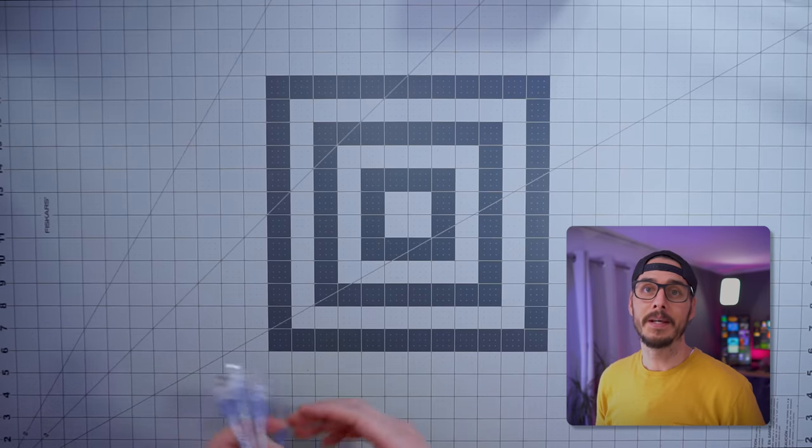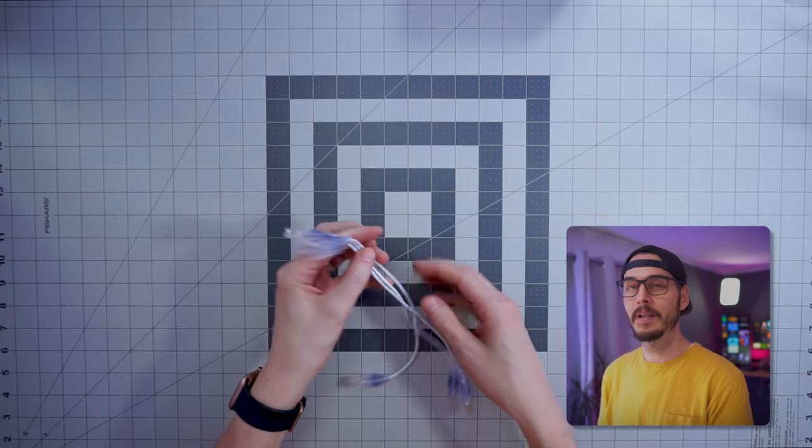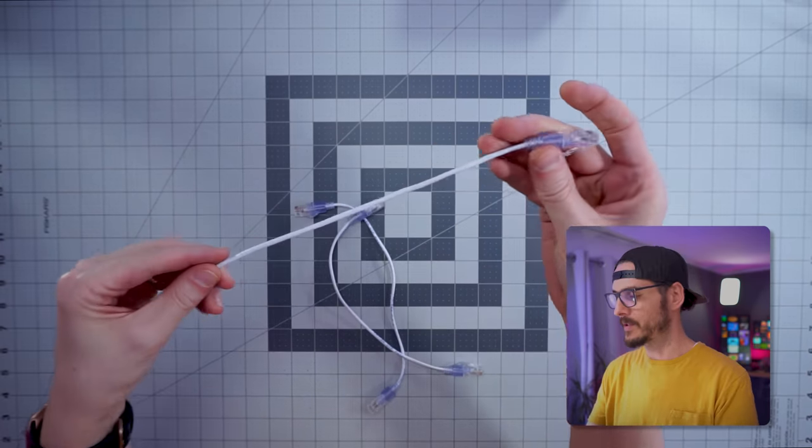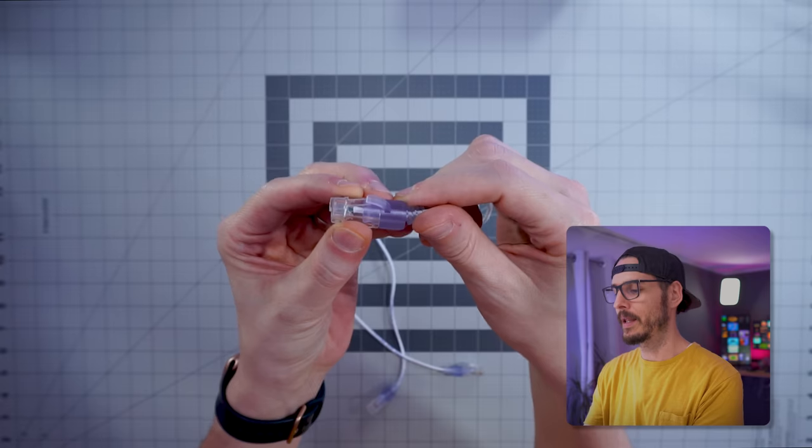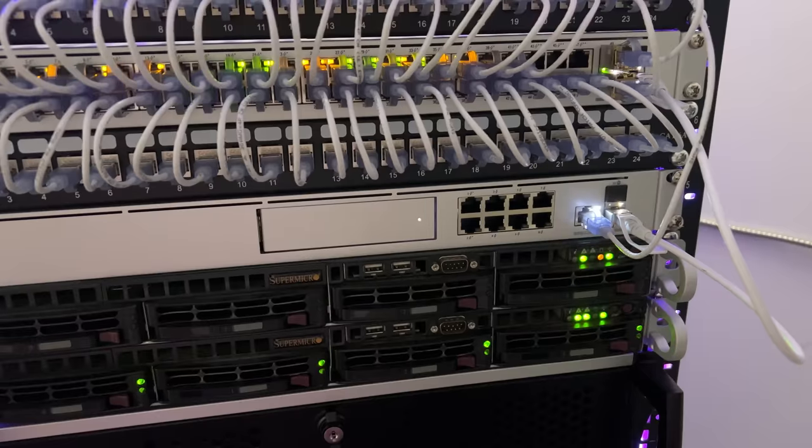First, we're going to start with the networking category. Now, if you've seen any of my videos, you know that I love these really slim Cat6 cables. These things are super nice, super slim, super high quality, even have snag protection, and they're iridescent.